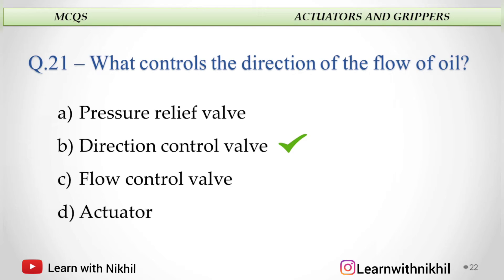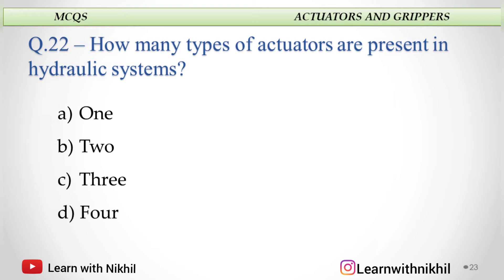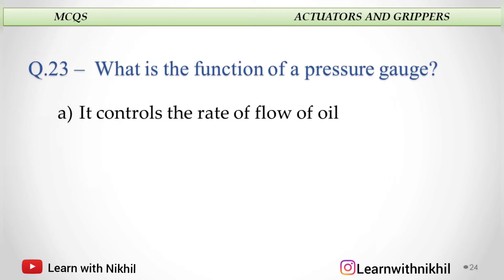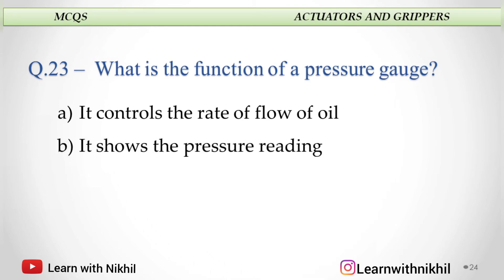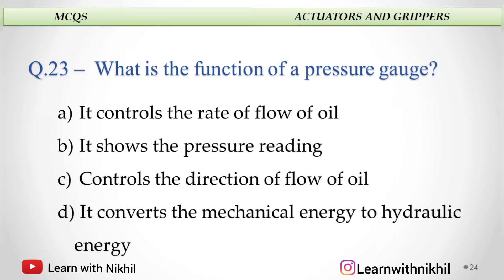How many types of actuators are present in a hydraulic system? A. One, B. Two, C. Three, or D. Four? There are two types of actuators present in a hydraulic system. What is the function of a pressure gauge? A. Controls the rate of flow of oil, B. Shows the pressure reading, C. Controls the direction of flow of oil, or D. Converts mechanical energy into hydraulic energy? The function of a pressure gauge is it shows the pressure reading.